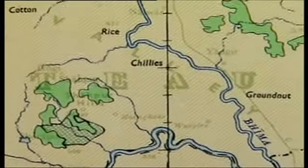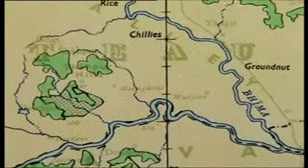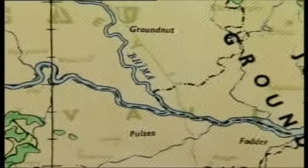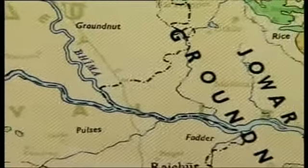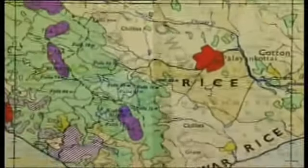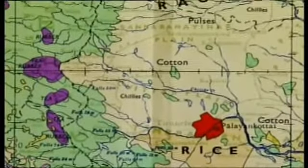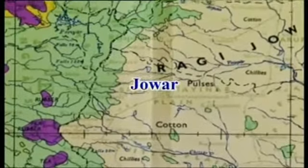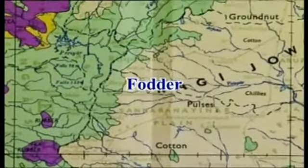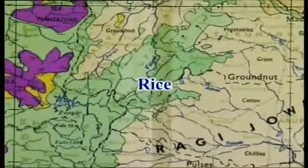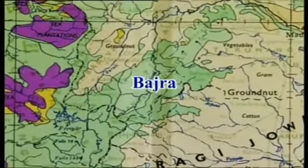The unirrigated croplands are distributed over almost two-thirds of this region, spread from north to south in the plateau regions. The major crops grown in the unirrigated zones are jowar, fodder, pulses, cotton, rice, bajra, groundnut, and sugarcane.